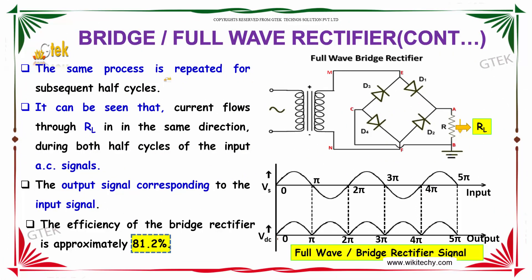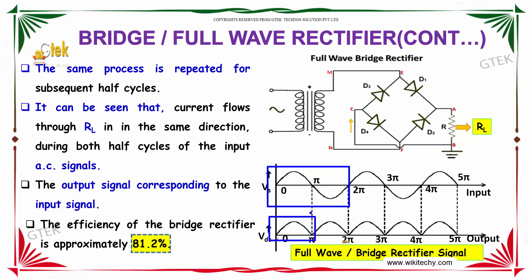The same process is repeated in subsequent half-cycles. The current through RL flows in the same direction during both half-cycles of the input AC signal. The output signal corresponding to the input signal is shown here. The efficiency of the bridge rectifier is approximately 81.2%.